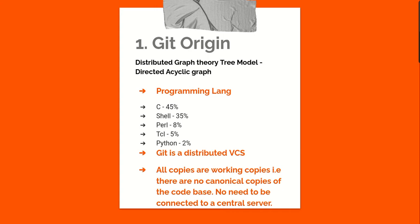Distributed version control system versus centralized version control system. Git falls under the distributed version control system category. It has brothers and cousins like Mercurial that also fall under that.